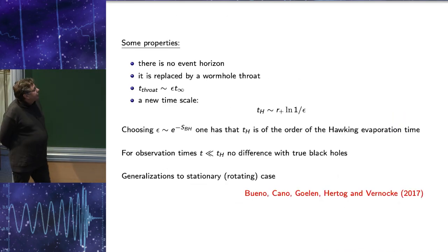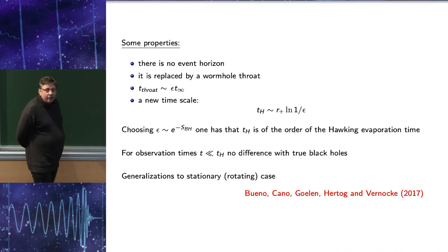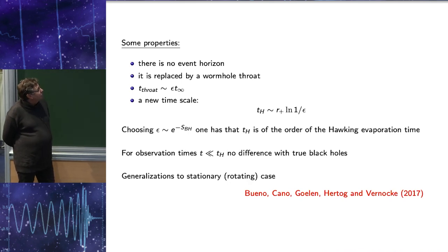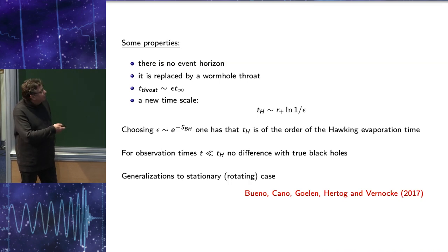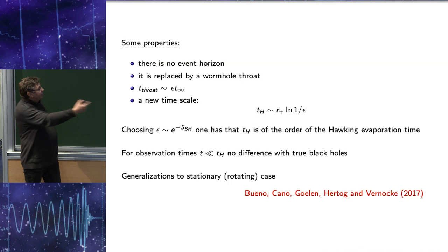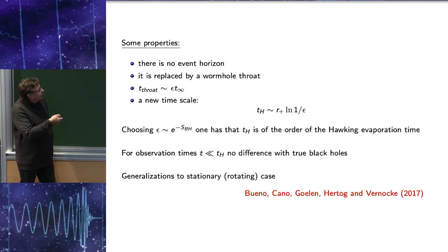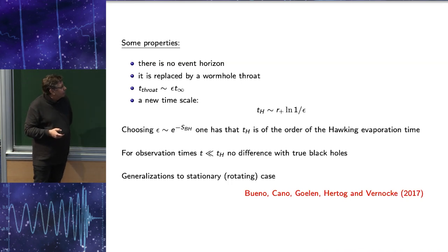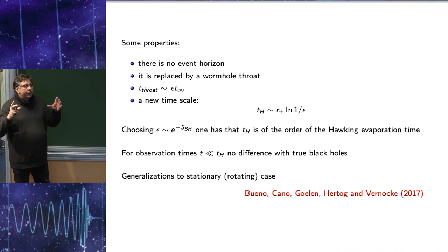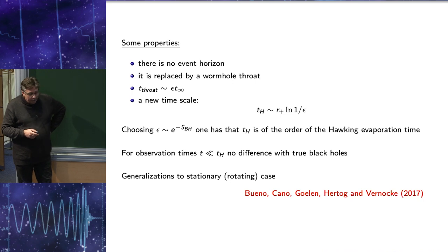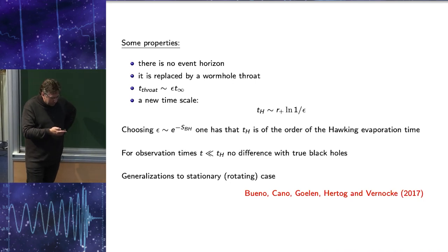Just make a small deformation, add small parameter epsilon to GTT. And then the black hole geometry immediately changes. And instead of black hole, we have a wormhole. And there are some interesting features. As I said, there is no horizon. Horizon is replaced by a wormhole throat. And there appears a new time scale.